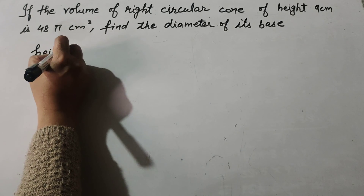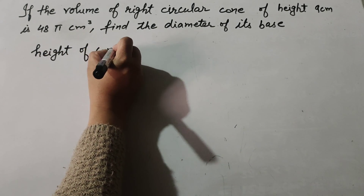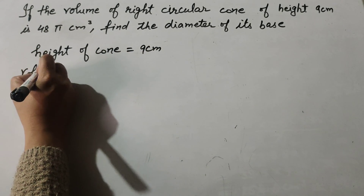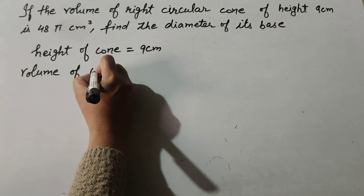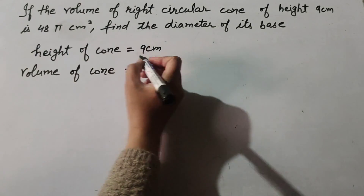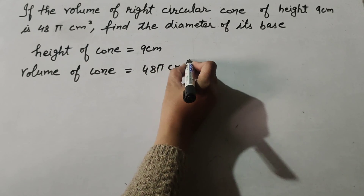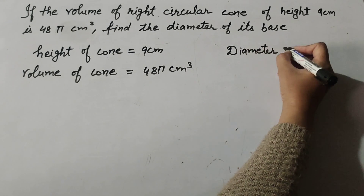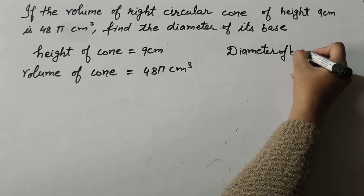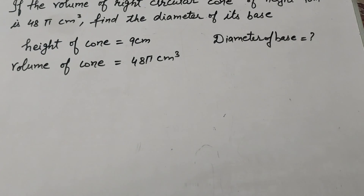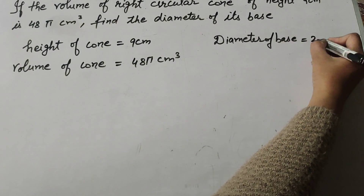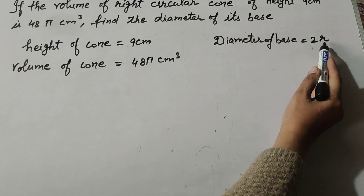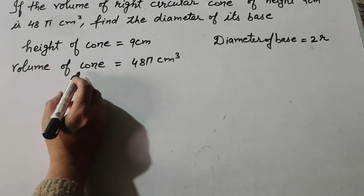So the given values are: height of cone = 9 centimeters, volume of cone = 48π centimeter cube, and we need to find the diameter of its base. The diameter of the base is equal to 2r, where r is the radius that we need to find.